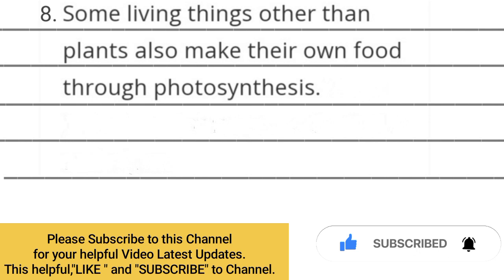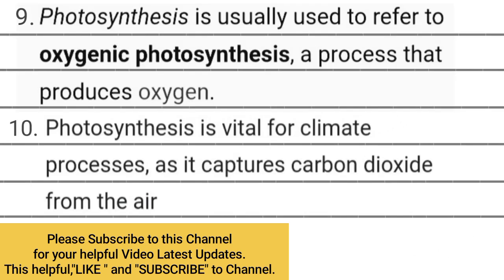Number nine: Photosynthesis is usually used to refer to oxygenic photosynthesis, a process that produces oxygen. Number ten: Photosynthesis is vital for climate processes, as it captures carbon dioxide from the air.